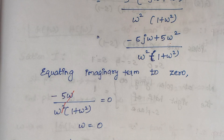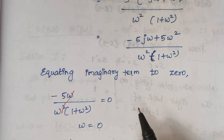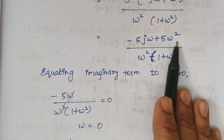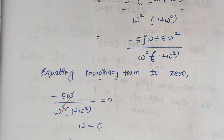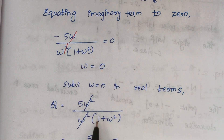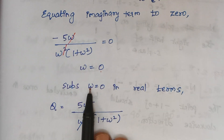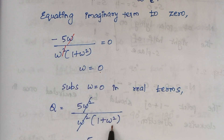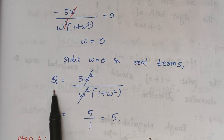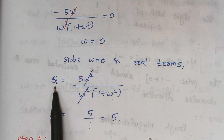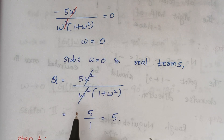Now we substitute omega = 0 into the real term: 5 omega squared divided by omega squared times (1 plus omega squared). Substituting omega = 0 gives 1 plus 0 = 1 in the denominator, so 5 divided by 1 = 5. Q is the intersection of the Nyquist plot on the negative real axis, but here Q = 5, which is positive.